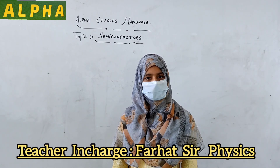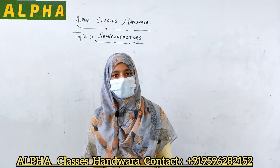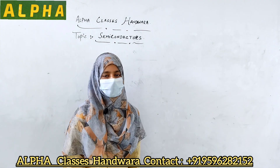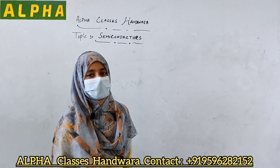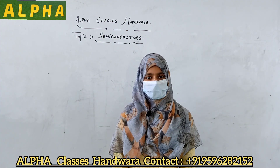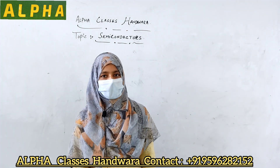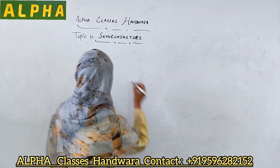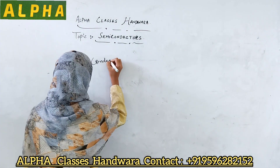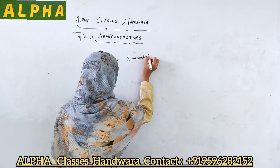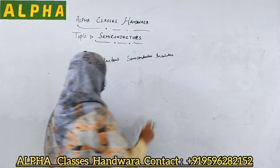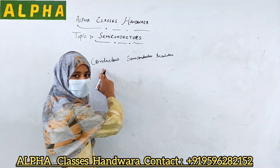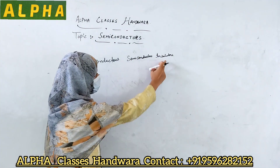The topic of my presentation is Logic Gates. Before going to Logic Gates, I am going to define what semiconductors are. Semiconductors are the materials having conductivity and resistivity in between conductors and insulators. The range of conductivity and resistivity of semiconductors lies in between conductors and insulators.